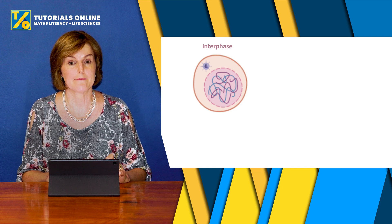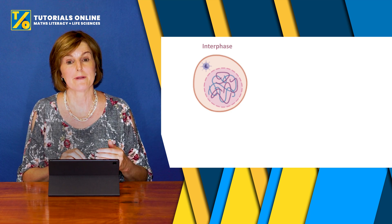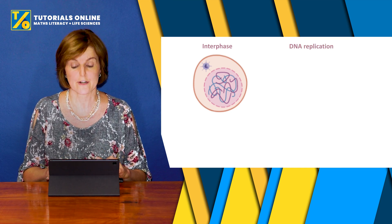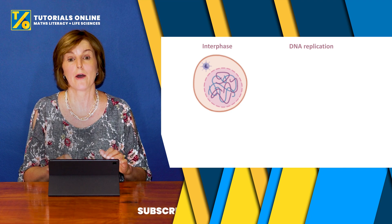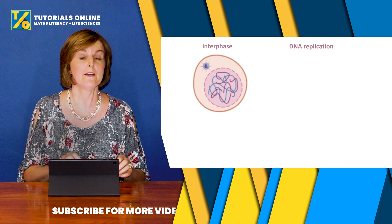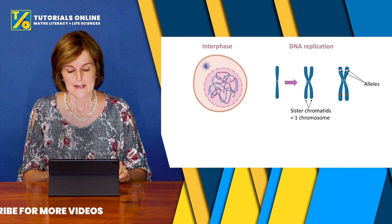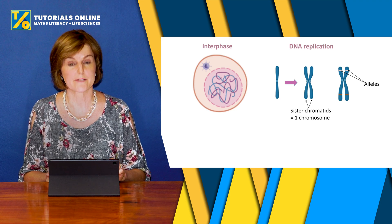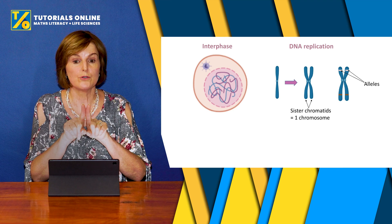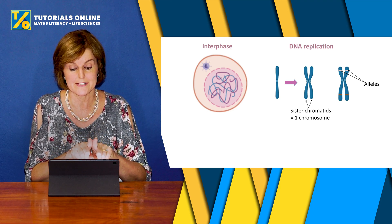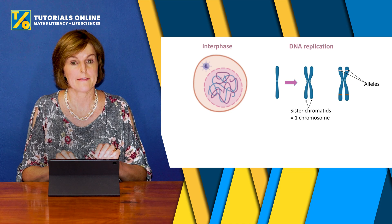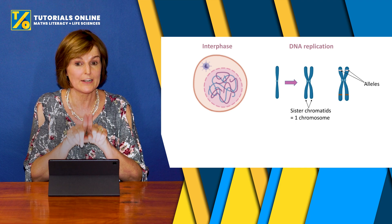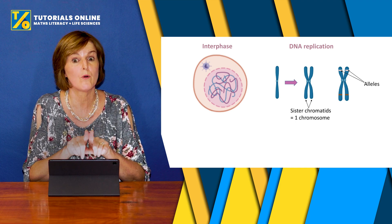If you think of interphase, remember in DNA replication, DNA replication takes place in the interphase. On the right-hand side you see you have a chromosome, then DNA replication takes place and they make a duplicate. The two chromatids are sister chromatids, joined by a centromere, and together they make one chromosome because they've got identical information — exact copies, but they still form one chromosome.